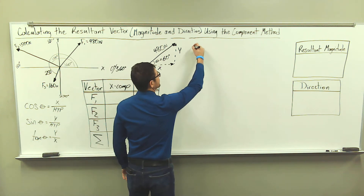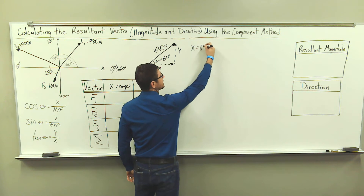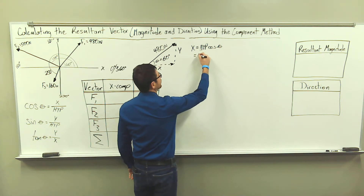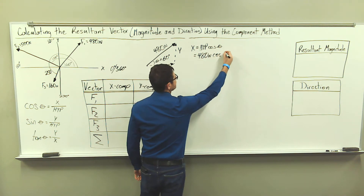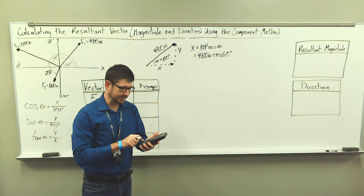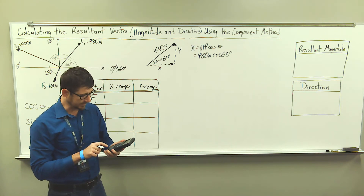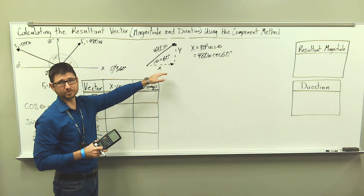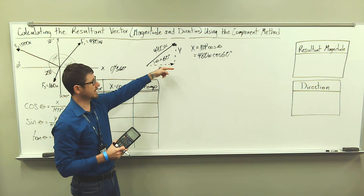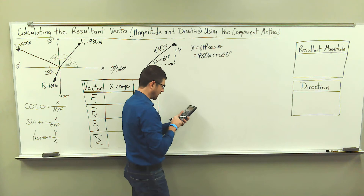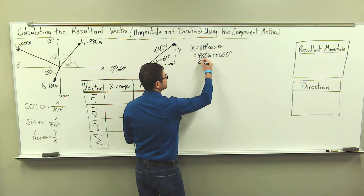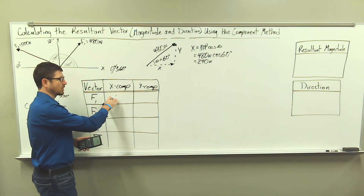For our x component, we know that the x component is equal to the hypotenuse times cosine of angle theta, where theta is our reference angle. So we have 480 newtons times cosine of 60 degrees. Your calculator needs to be in degree mode. This is going to be a positive 480 newtons because we are moving in a positive x direction for force one. So 480 times cosine of 60 degrees is going to be 240 newtons. Let's go ahead and put that value in the table.